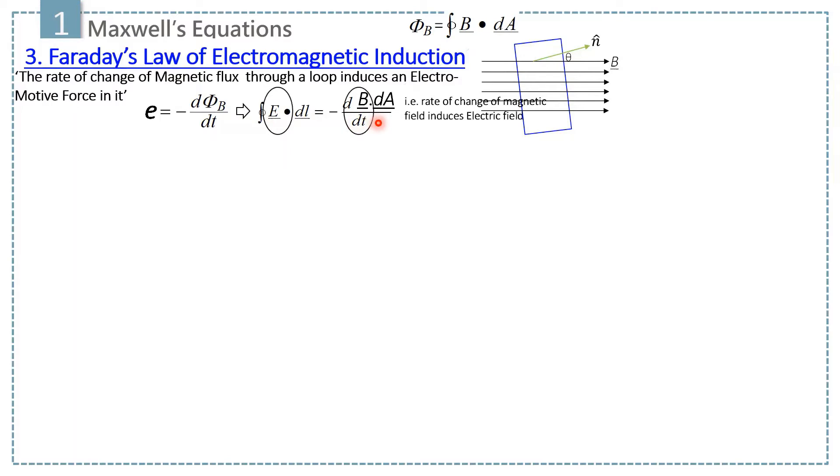These two quantities, derivative of B and electric field, give us very important results. It means whenever there is change in magnetic field, we will always get electric field. So, it means changing magnetic field creates electric field.